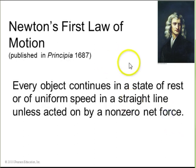So here we come to Newton's first law of motion, published well after Galileo died in 1687, but basically saying exactly what Galileo discovered, which is that every object either continues in a state of rest or continues with a uniform speed in a straight line, unless it's acted upon by a non-zero net force.